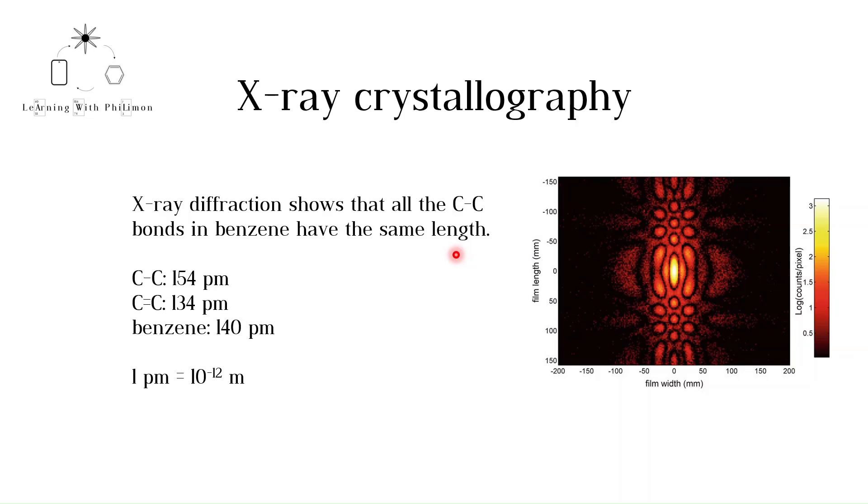Carbon-carbon single bonds have a length of 154 picometers, whereas carbon-carbon double bonds have a length of 134 picometers. The carbon-carbon bonds in benzene have a length between that of a single and a double bond, 140 picometers. Note that 1 picometer is equal to 10 to the minus 12 meters.